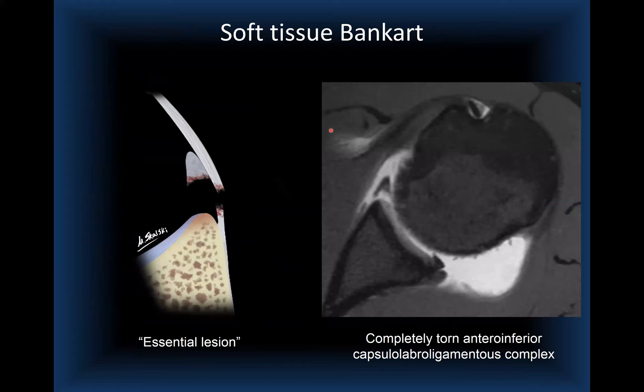A beautiful illustration by Matt Skalski — an excellent MSK radiologist and artist who provided the majority of the illustrations for this talk — shows complete detachment of the anteroinferior capsulolabral ligamentous complex: the soft tissue Bankart, the essential lesion in this type of instability.